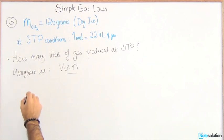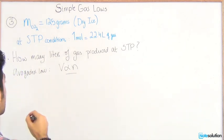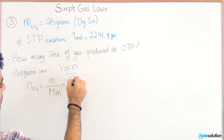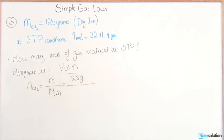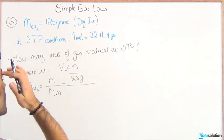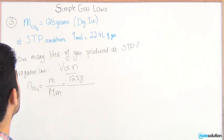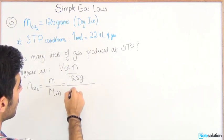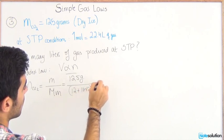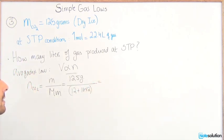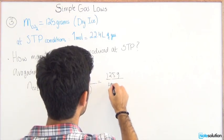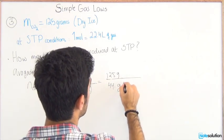We start off by getting the number of moles of gas present. Number of moles of CO2 is equal to mass over molar mass. We know the mass is 125 grams. What is the molar mass of carbon dioxide? We have carbon that's 12 and we have oxygen that's 16 times 2 because we have 2 oxygens. 12 plus 16 times 2, you would get 125 grams over 44 grams per mole.